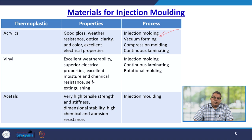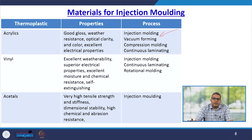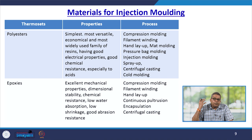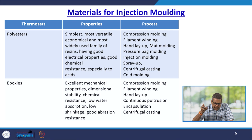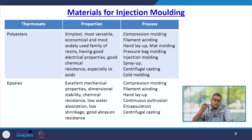Vinyl has excellent weatherability, superior electrical properties, excellent moisture and chemical resistance, and is self-extinguishing — it can also be injection moulded. Acetyls have very high tensile strength and stiffness, dimensional stability, and high chemical and abrasion resistance — also injection mouldable. If you need the simplest, most versatile and economical widely-used family of resins, choose polyesters, which have good electrical properties and good chemical resistance, especially to acids — they can also be injection moulded.